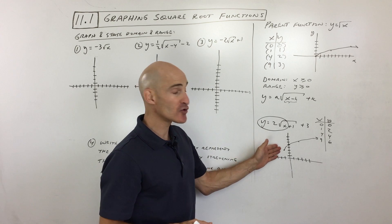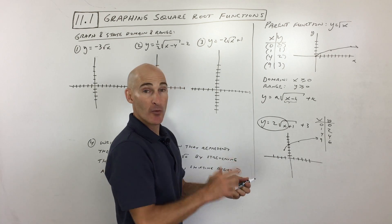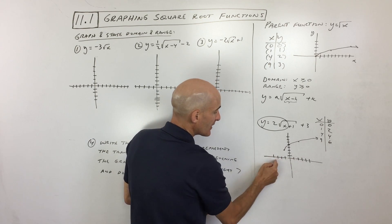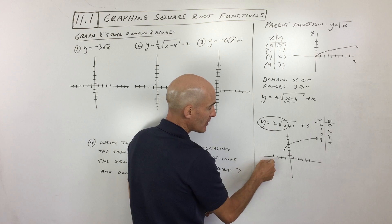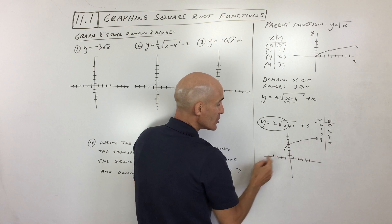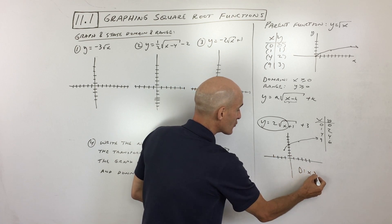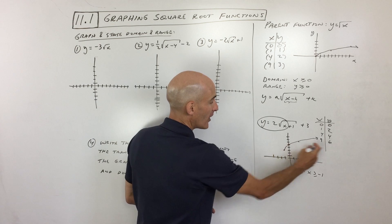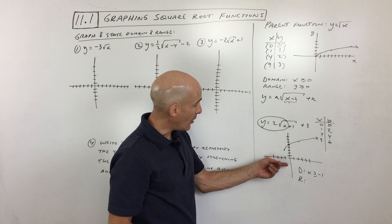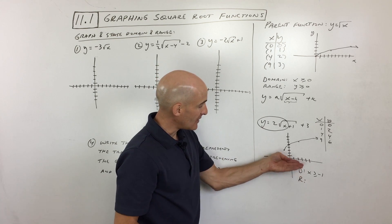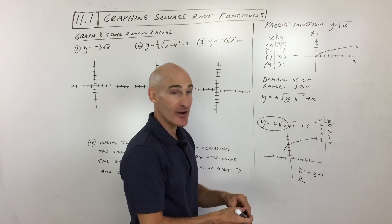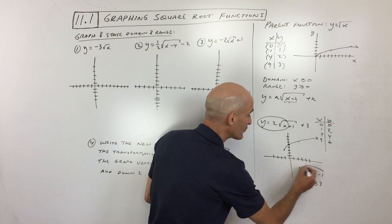The questions will often ask for domain and range. The domain is what the x values can be. Can x be negative four? No, there's no point on the graph there. Can it be negative one? Yes. So the domain is x is greater than or equal to negative one. The range is what the y values can be. Can y be negative? No. Can it be zero? No. Can it be three or higher? Yes. So the range is y is greater than or equal to three.